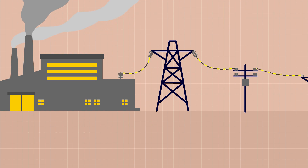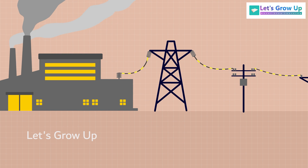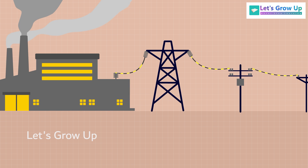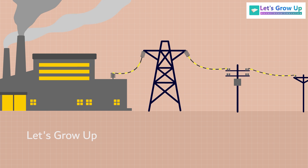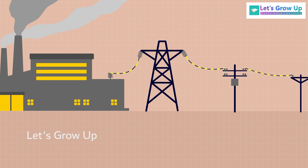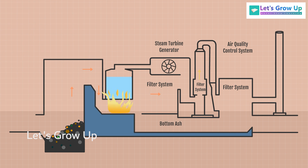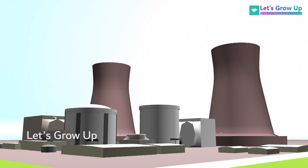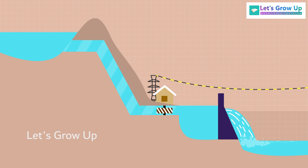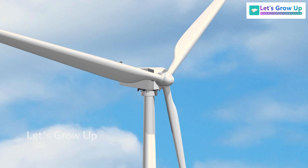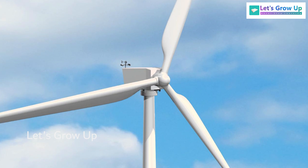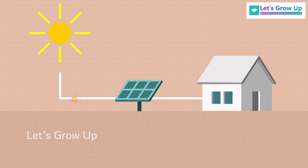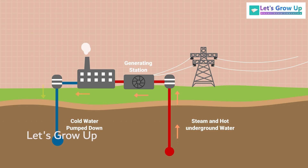The electricity is generated at power plants using a variety of energy sources, including fossil fuels like coal and natural gas, nuclear power, hydroelectric dams, wind turbines, solar panels, and geothermal sources.